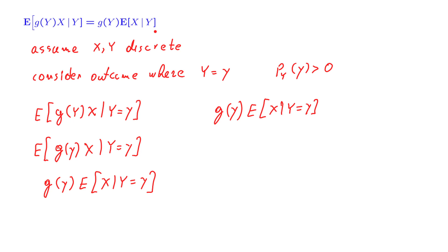Now, this is a correct proof if the random variables are discrete. If the random variables are continuous or general, then carrying out a rigorous proof is actually quite subtle, and it is beyond our scope. However, the intuition is still correct, and the result is correct, and we will be using it freely whenever we need to.